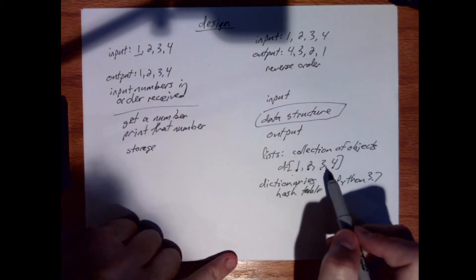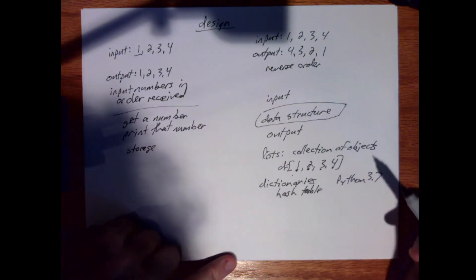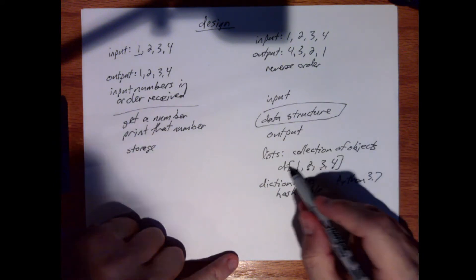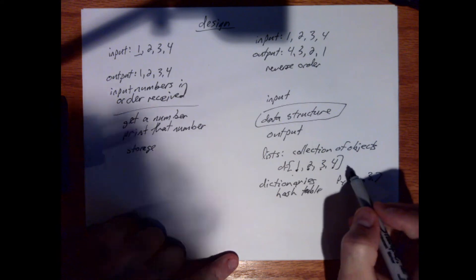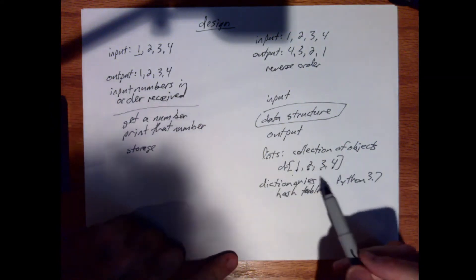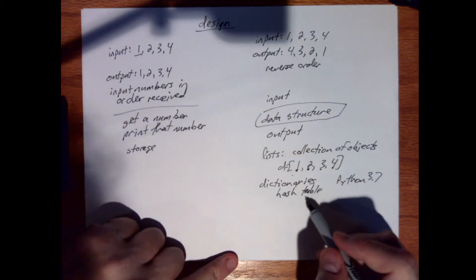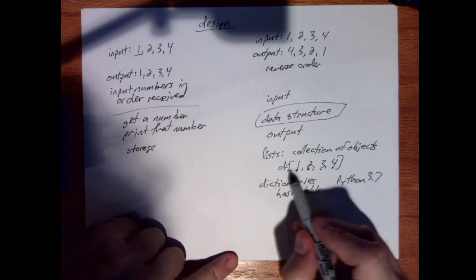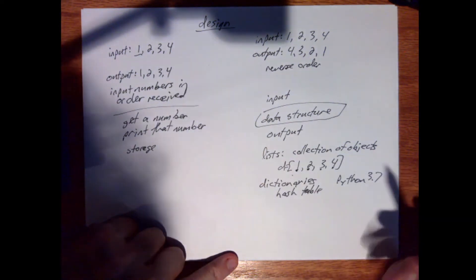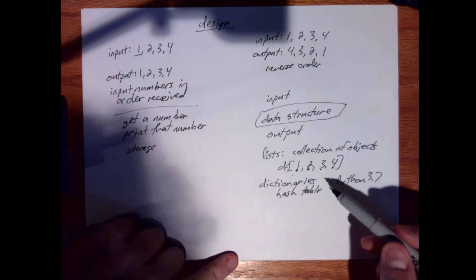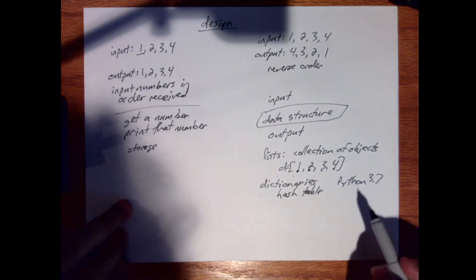Lists are typically slower when searching for something because you may have to scan every element to find what you need. Hash tables let you give a key and immediately locate the value. There's a complication called a collision — multiple keys can hash to the same location — but that's better discussed in a data structures course. The key point is: look at your input, look at what output you want, and think about which data structure gets you there.